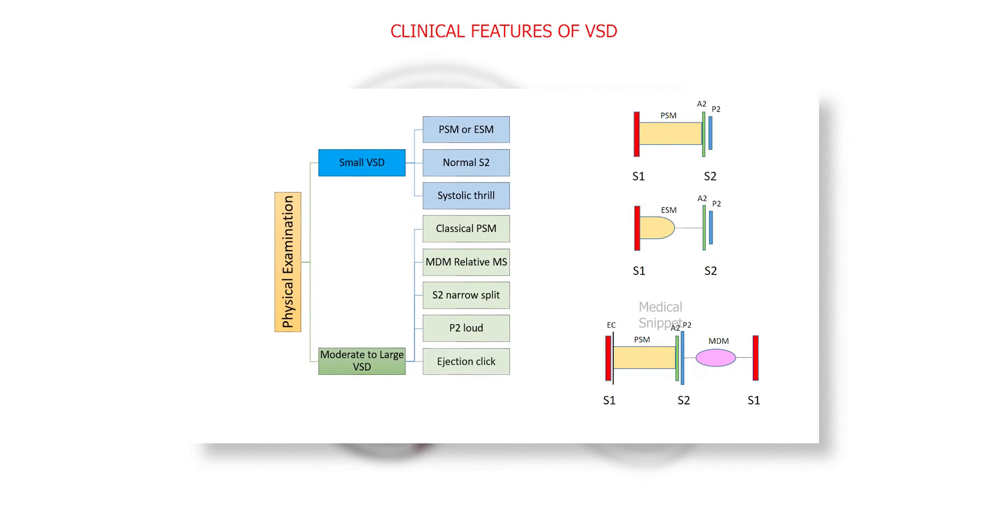Ejection click may be audible in the upper left sternal border if pulmonary hypertension is present. There may be a systolic thrill at the lower left sternal border. Moderate VSD has similar auscultatory findings as of large VSD.